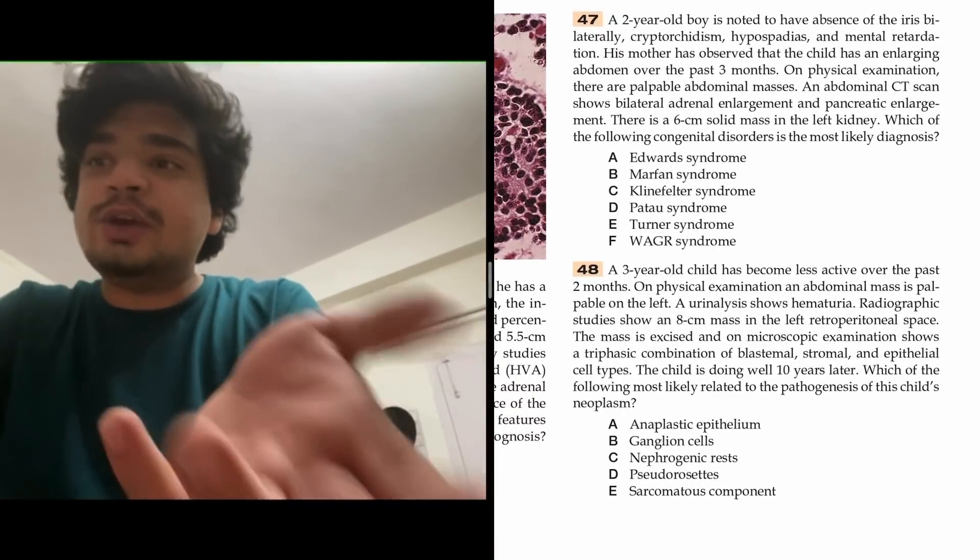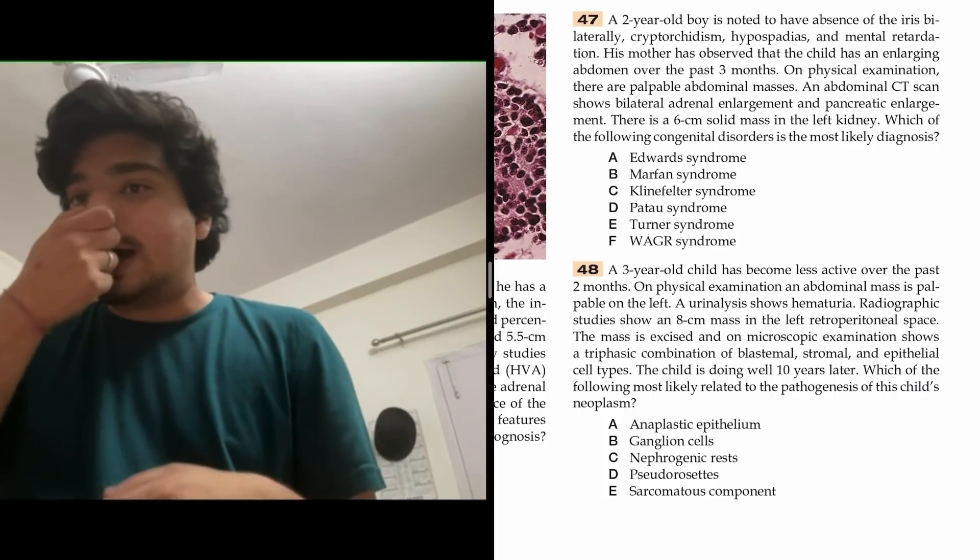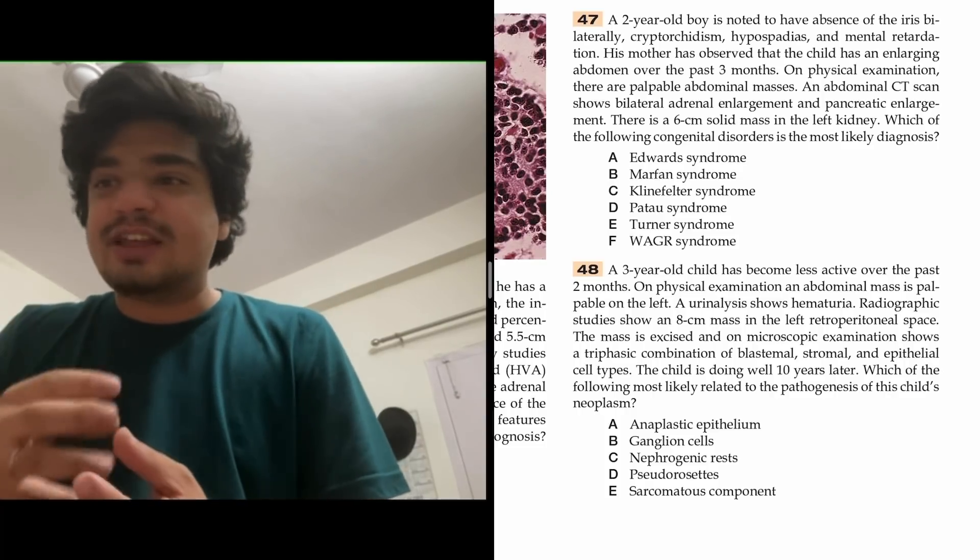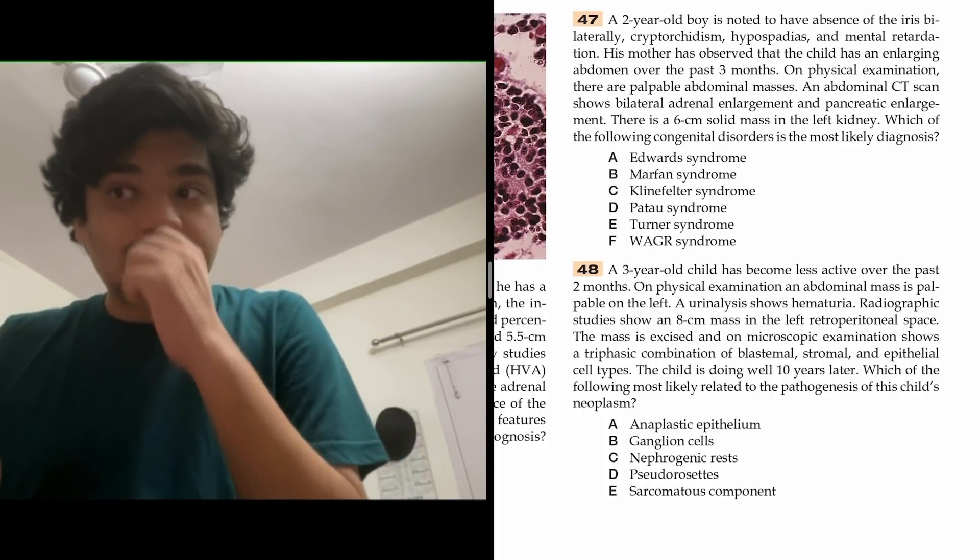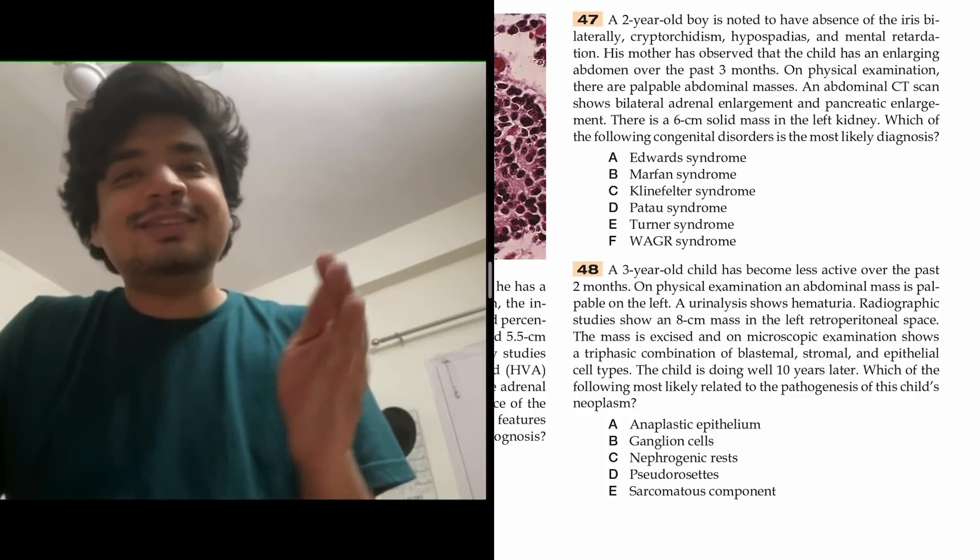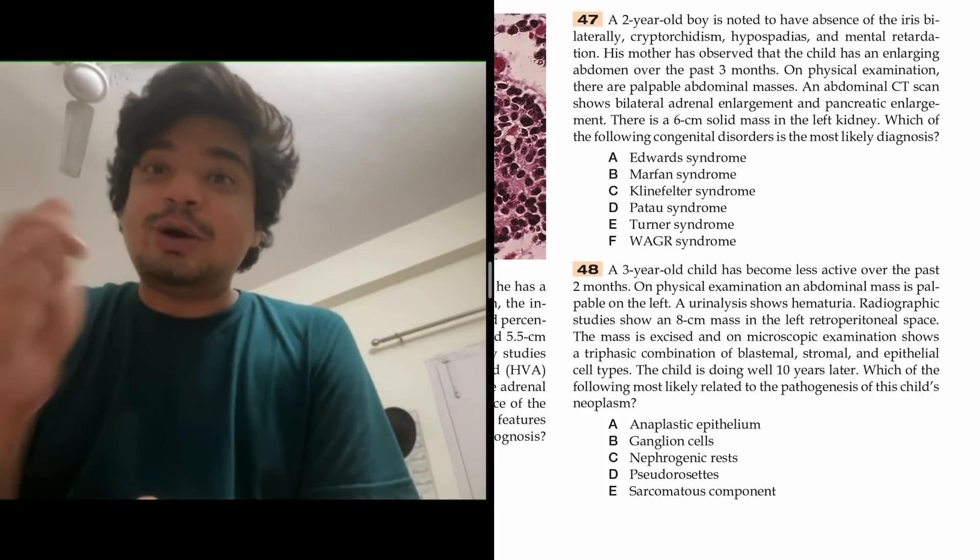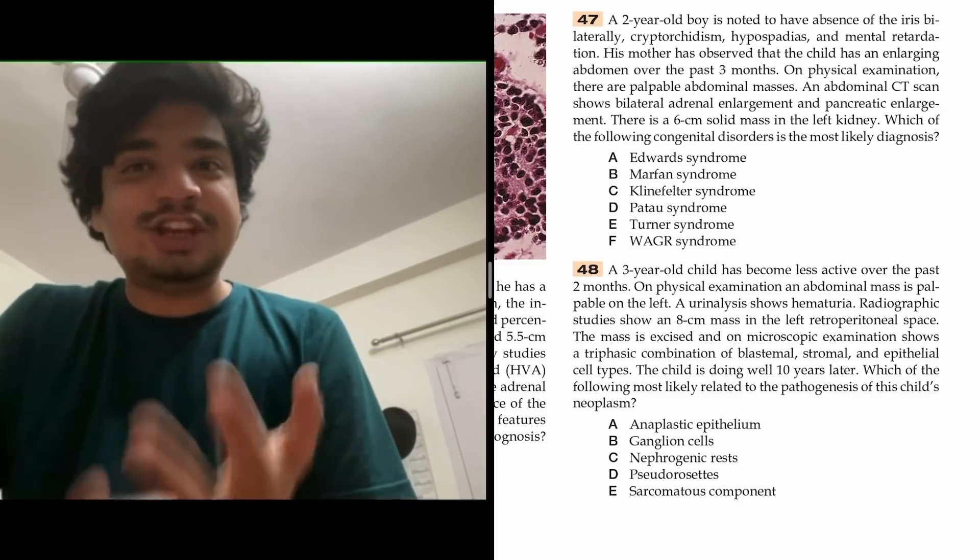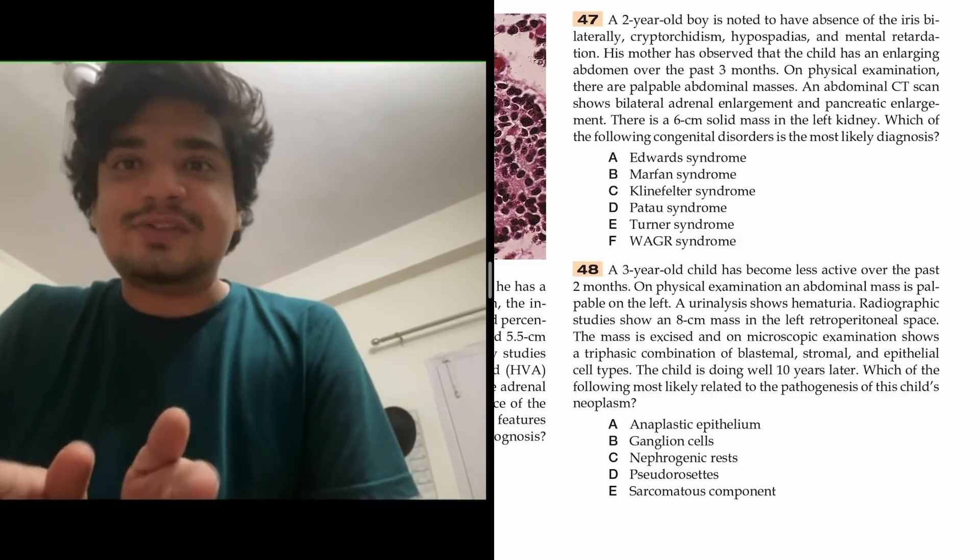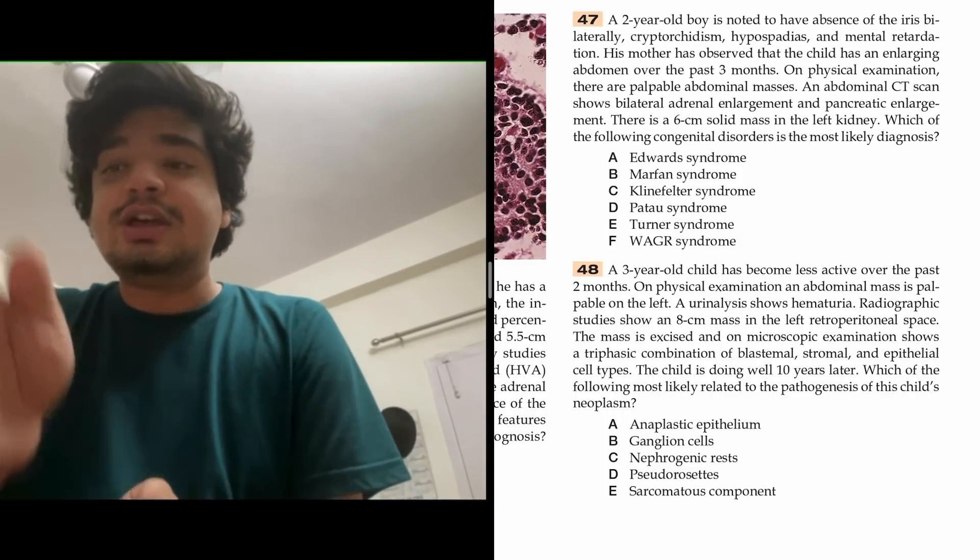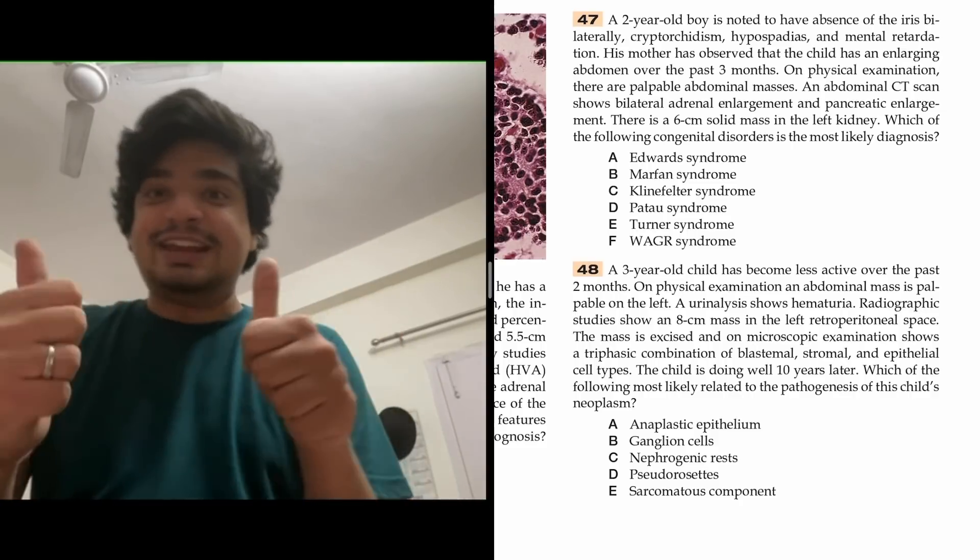A three-year-old boy who is less active for the past two months has an abdominal mass and hematuria. The mass is excised, you see plasma and stromal components. Child is doing well ten years later. Which of the following is related to the pathogenesis? This is how you integrate clinicals into paraclinical. They asked a question about Wilms tumor - abdominal mass, three years old, hematuria.